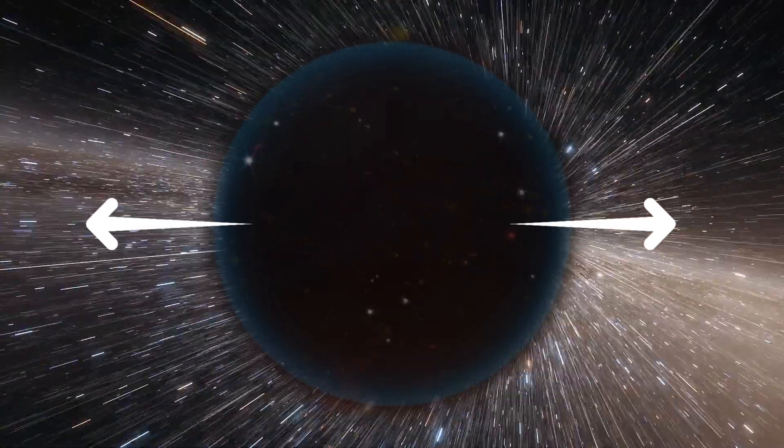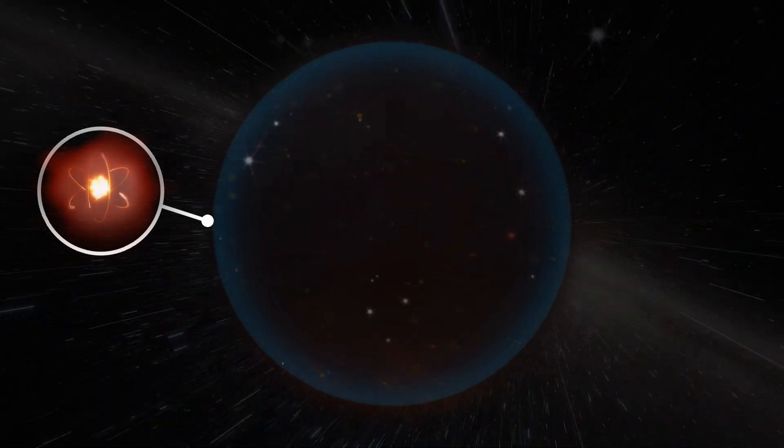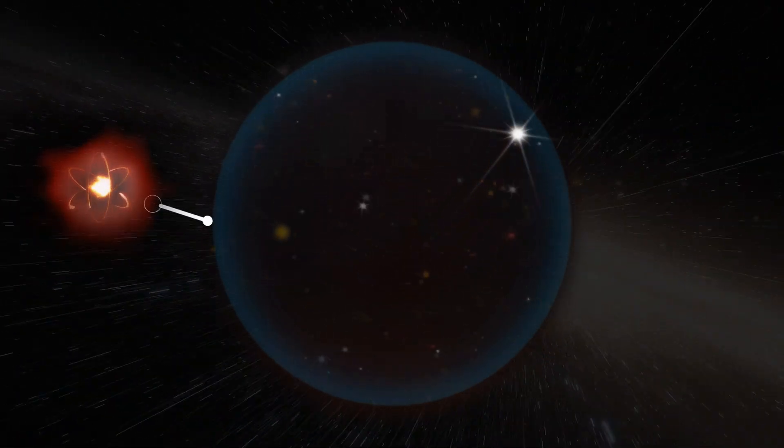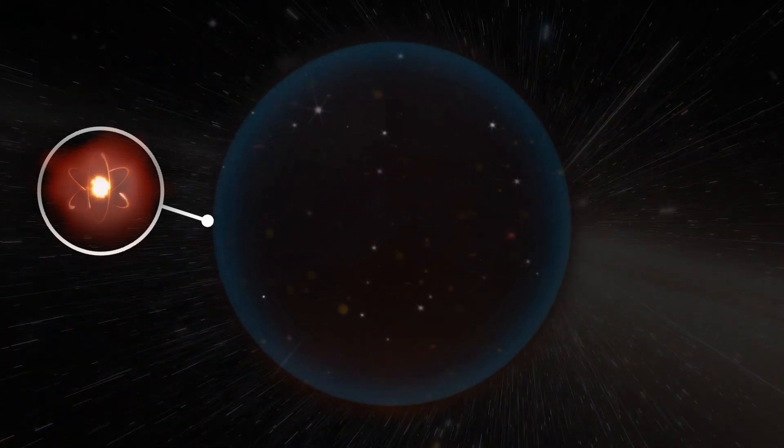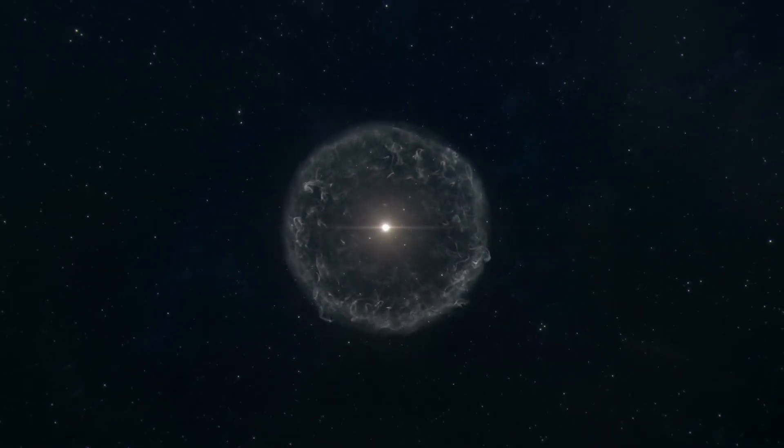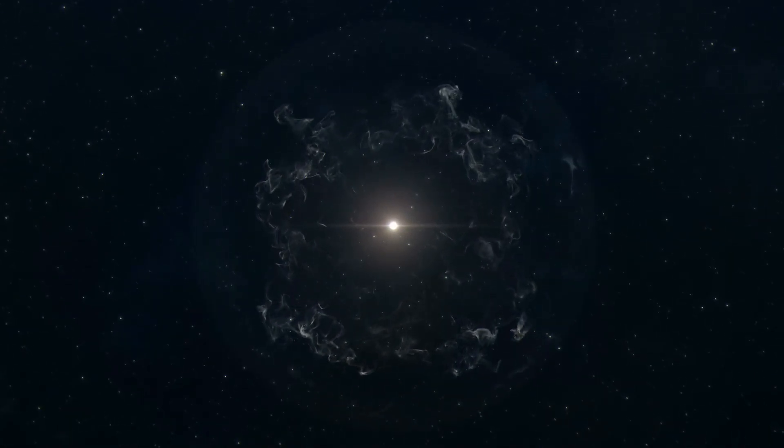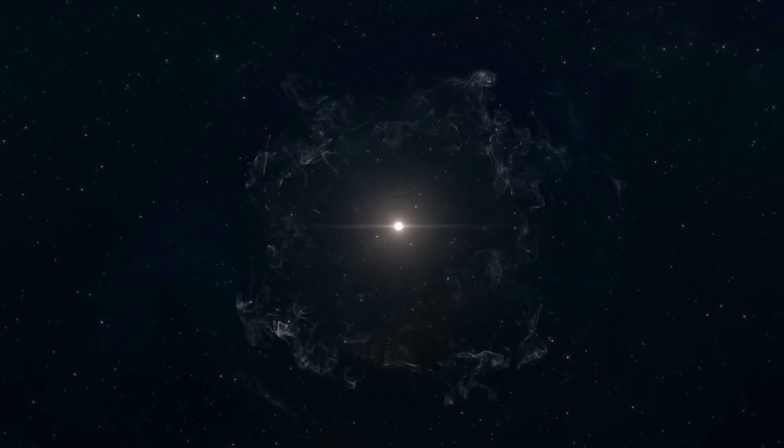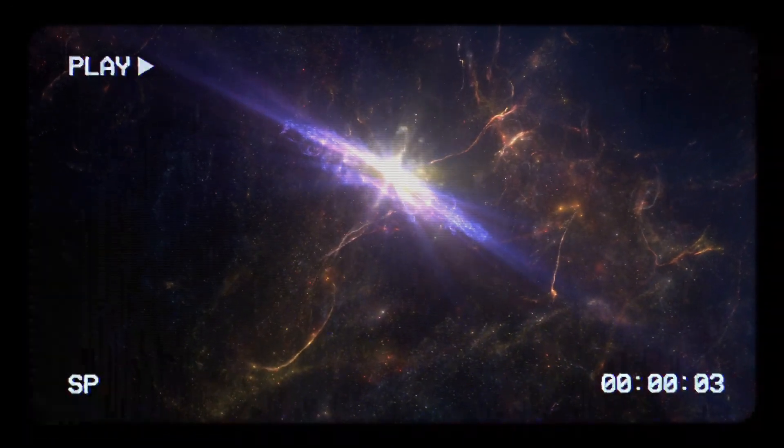As we turn our attention to objects situated beyond this Hubble boundary, their emitted light endeavors to traverse the cosmic expanse to reach us. However, the accelerating expansion in the interstellar space between us and these distant entities causes rapid stretching of the wavelengths. This accelerated stretch implies that the light from these remote stars and galaxies is, in essence, outpacing its journey towards us.